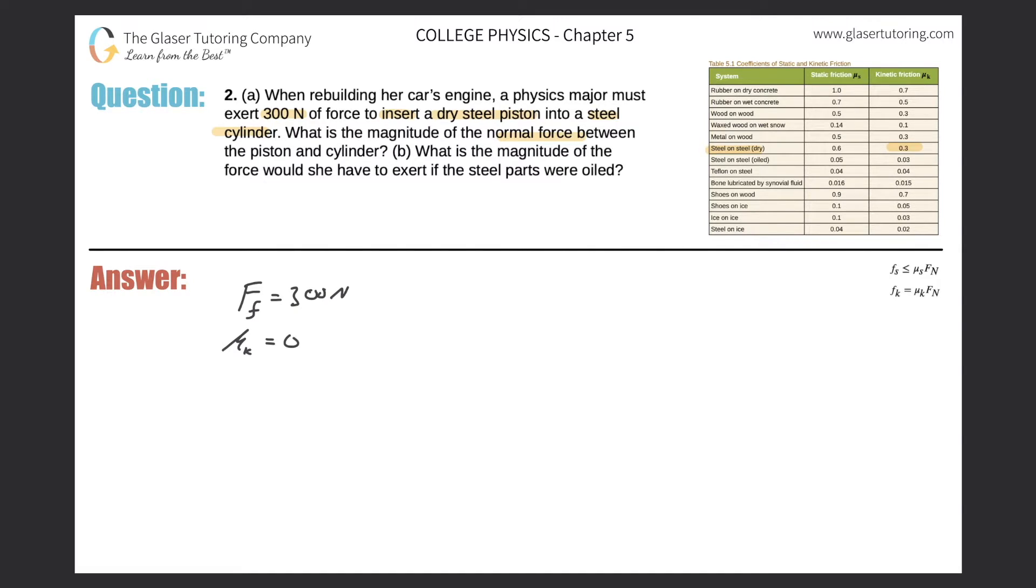So that's the value, let me just change the color, 0.3. And then in order to find now the normal force, right, we can relate these three variables via this equation. The kinetic frictional force is equal to the coefficient of kinetic friction multiplied by the normal force, F sub n. So the kinetic frictional force was 300 newtons, the coefficient of kinetic friction was 0.3 multiplied by the normal force. So simply just divide out the 0.3, and the math works out. Now the normal force is a thousand newtons.